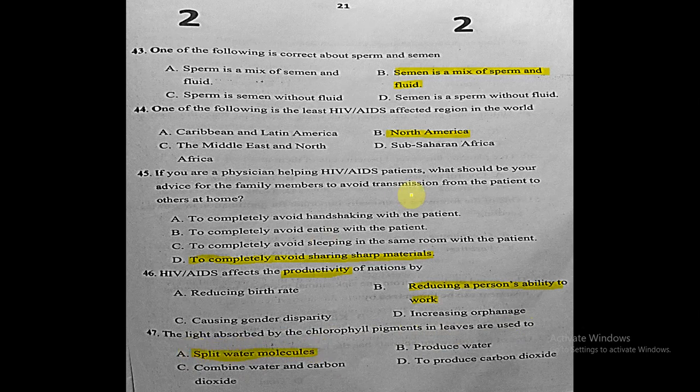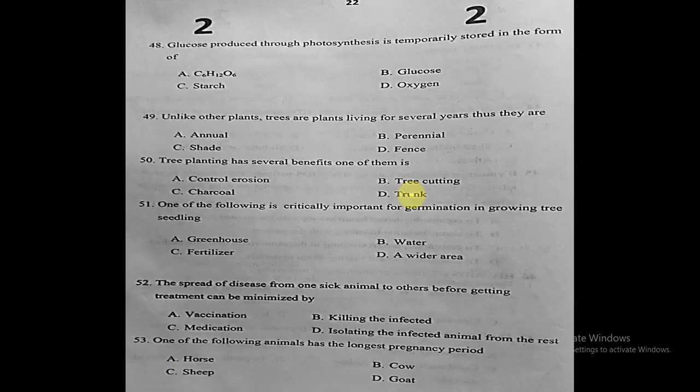Question forty-eight: glucose produced through photosynthesis is temporarily stored in the form of what? The correct answer is starch. It is not stored as C6H12O6 (glucose itself), oxygen, or in any other form temporarily — it is stored as starch.